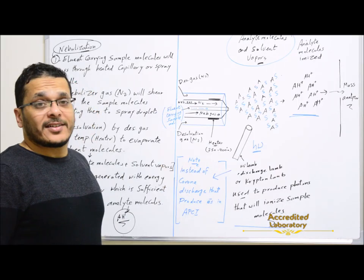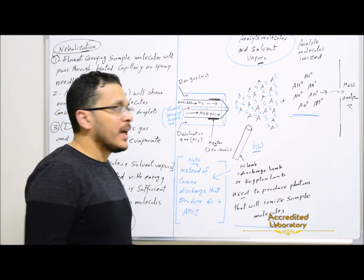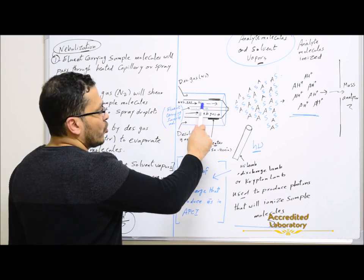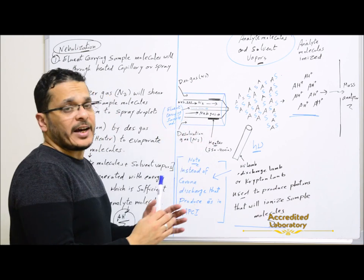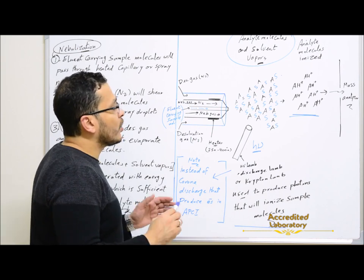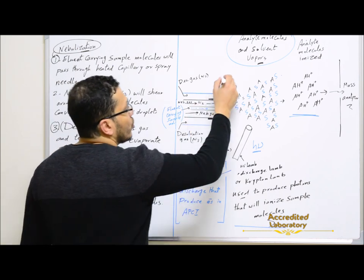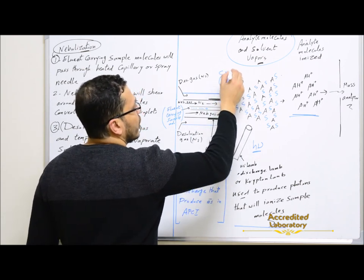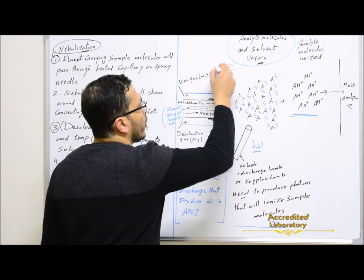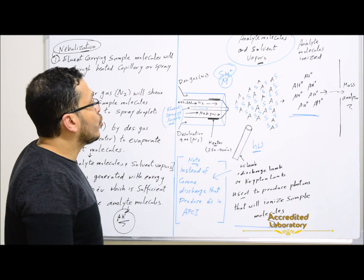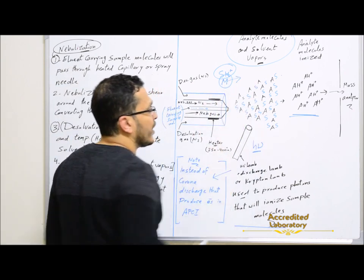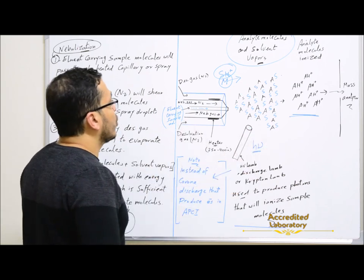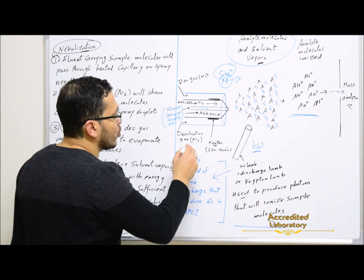The mobile phase from the HPLC will carry the sample and it will be transferred through the spray needle. The nebulizer gas, or nitrogen gas, shears around the eluent carrying sample molecules, nebulizing them to spray droplets which consist of sample molecules surrounded by solvent molecules. We need to evaporate the solvent molecules to get only the analyte molecules that will be ionized to get analyte ions to be transferred to the mass analyzer.